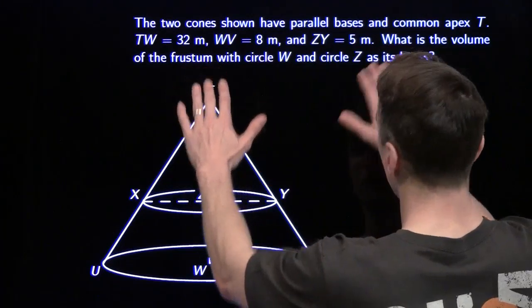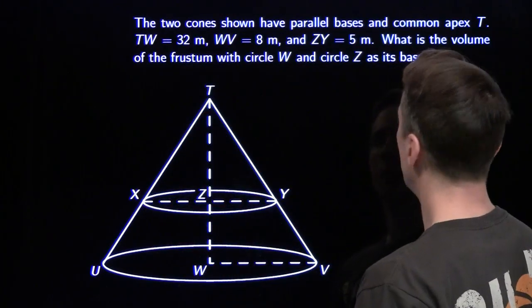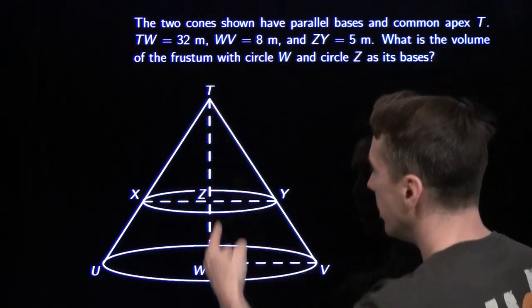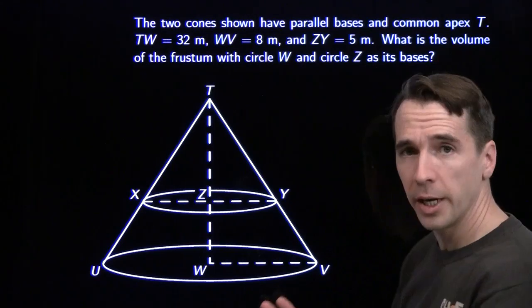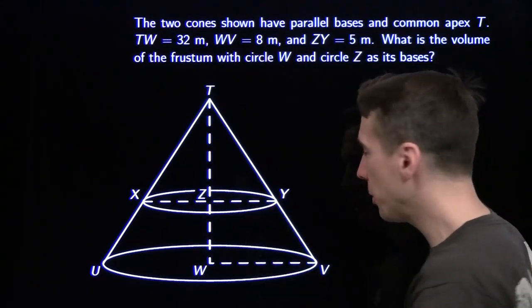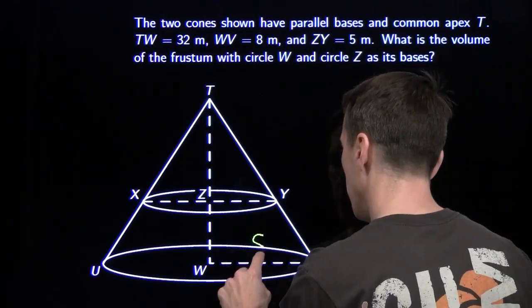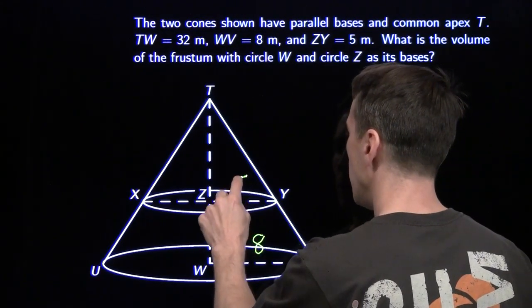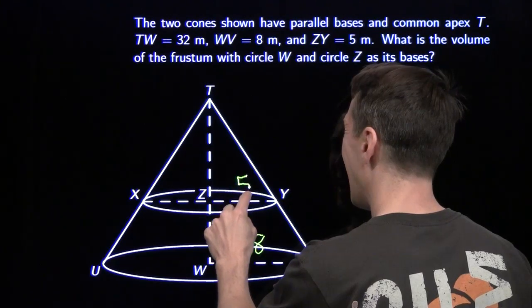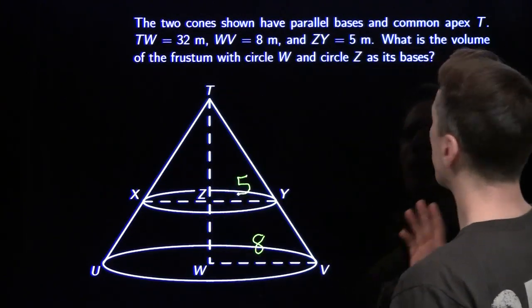Alright, we're starting off with two cones, parallel bases. They gave us the height of the large cone, and they gave us the radii of both of the cones. We've got a radius of 8 on the large cone, radius of 5 on the small cone.